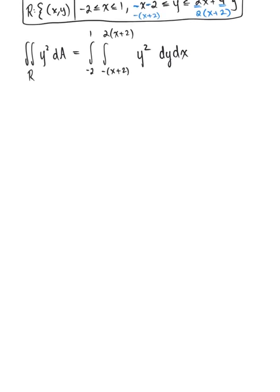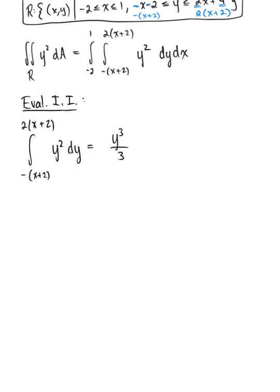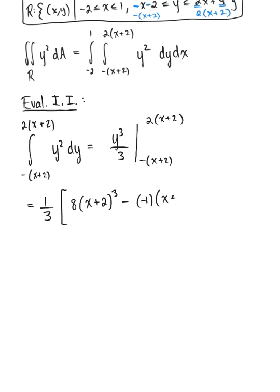Now we evaluate the inner integral, integrating first with respect to y. We have the integral from minus(x plus 2) up to 2(x plus 2) of y squared dy, which gives us y cubed over 3 evaluated from minus(x plus 2) to 2(x plus 2). Keeping one third out front, we have 2(x plus 2) cubed, which is 8(x plus 2) cubed, minus negative 1 cubed times (x plus 2) cubed.